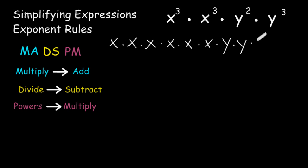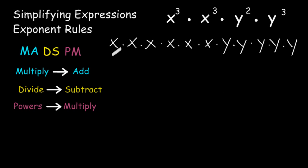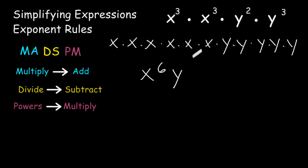And at the end we have y to the third power, so we write that three times. Now if you take a look at this entire expression in expanded form, you would see that we have six x's in a row. Because x is being multiplied by itself six times, we can write that as x to the sixth power. And we have y being multiplied by itself five times, so we write that as y to the fifth power. After simplifying, we get x to the sixth power times y to the fifth power.